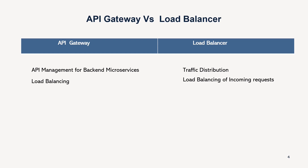Traffic coming from mobile channels, browsers, or IVR is going to hit the load balancer first. The load balancer then distributes that traffic to the various servers.